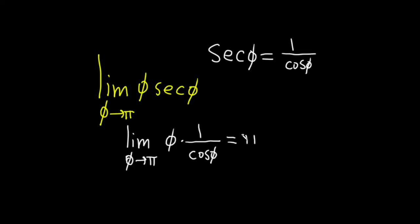This is pi times 1 over cosine of pi, which equals pi times 1 over negative 1, since cosine of pi is negative 1.